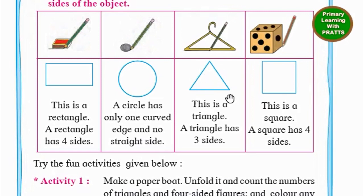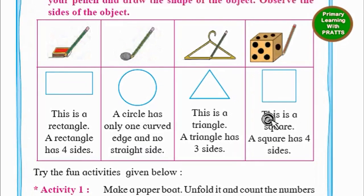A triangle. This is a triangle. A triangle has 3 sides. And if you trace out a dice, what do you get? This is a square. A square has 4 sides.